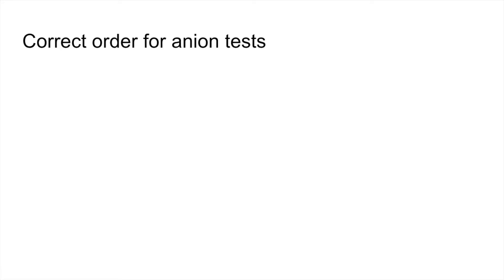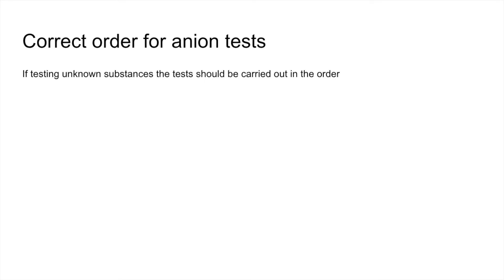Moving on to the correct order for the anion tests — those are the negatively charged ions. The ammonium ion test can be done at any point; I would normally do that first. The anion tests need to be carried out in the correct order: carbonate, then sulfate, then halide. Luckily it spells out a familiar word — CASH. There's no official 'CASH order'; I just came up with that acronym to remember the order for the tests. In the previous slides the assumption was we already knew which ion was in the test tube; now we're thinking about testing a mystery substance, so we do them in this particular order.